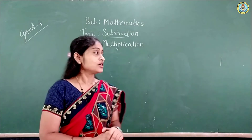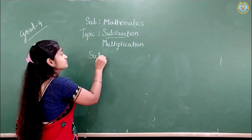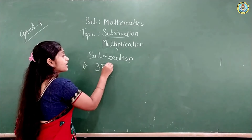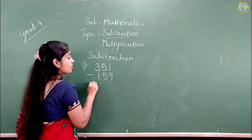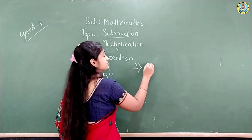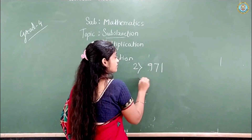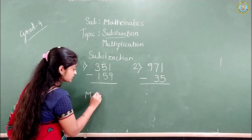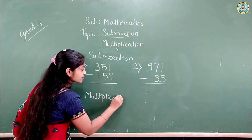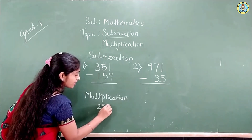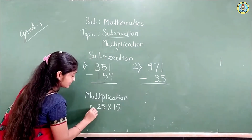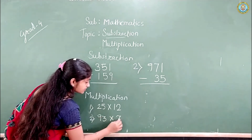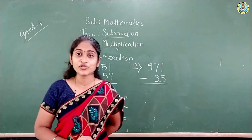You have to do homework also. I am going to give you homework for subtraction and multiplication. You have to solve these examples using the process of regrouping or without regrouping. For multiplication, the first example is 25 into 12, and the second example is 93 into 7. You have to solve these 2 examples at home as homework and show me tomorrow.